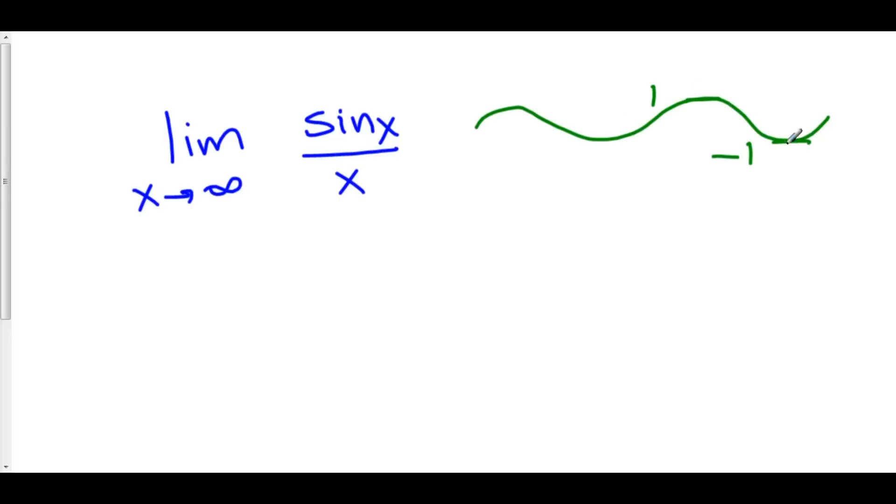When we have some number bounded between 1 and negative 1 divided by this magnitude of infinity, well, this fraction is going to go down to 0 because my denominator is expanding so fast.